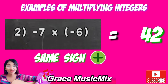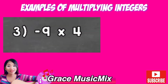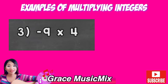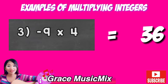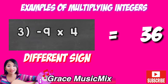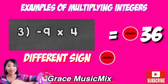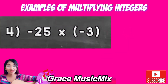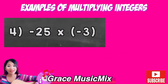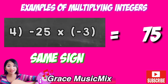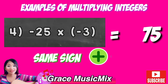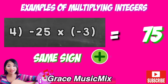Example number 3: negative 9 times 4. 9 times 4 is 36, different sign is negative — negative 36. Example number 4: negative 25 times negative 3. 25 times 3 is 75, same sign is positive — positive 75.